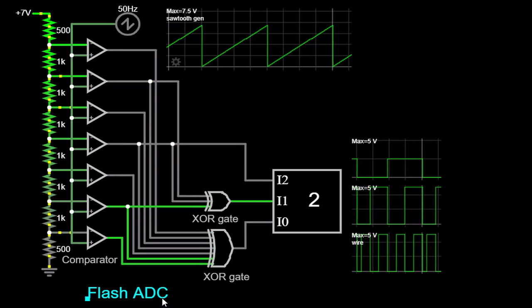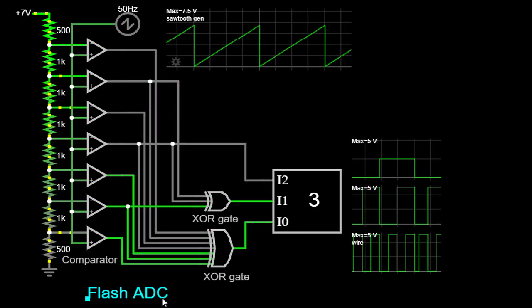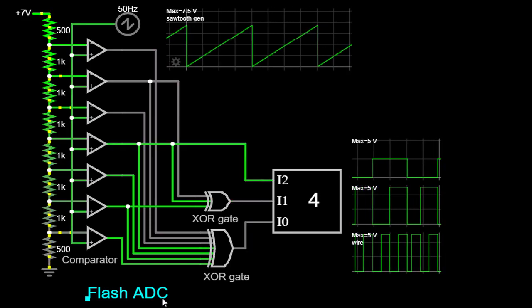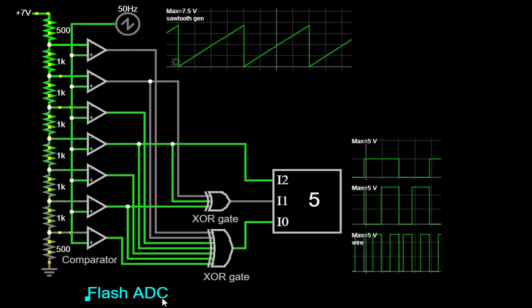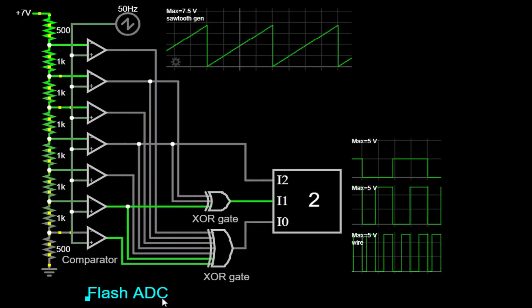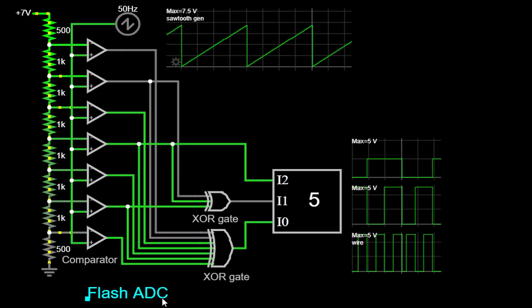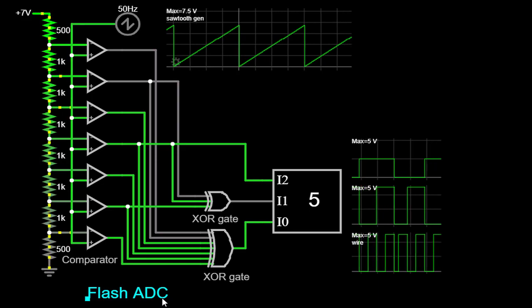Furthermore, Flash ADCs are limited in terms of their dynamic range. The reference voltages must cover the entire range of the input signal to ensure accurate conversion. This requirement becomes more challenging as the resolution and input voltage range increase. Consequently, Flash ADCs are often used in applications where the input signal has a relatively narrow range or when a lower resolution is acceptable.